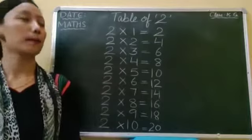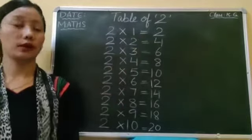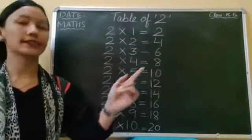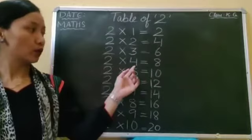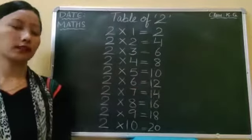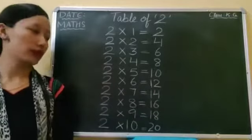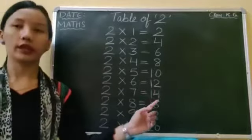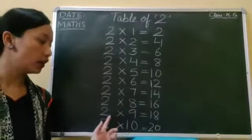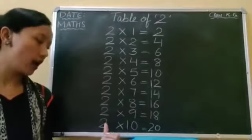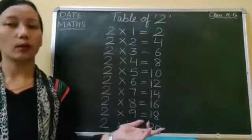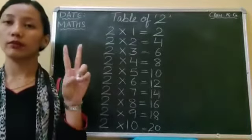One more time: two ones are two, two twos are four, two threes are six, two fours are eight, two fives are ten, two sixes are twelve, two sevens are fourteen, two eights are sixteen, two nines are eighteen, two tens are twenty. This work you will do in your math notebook two times.